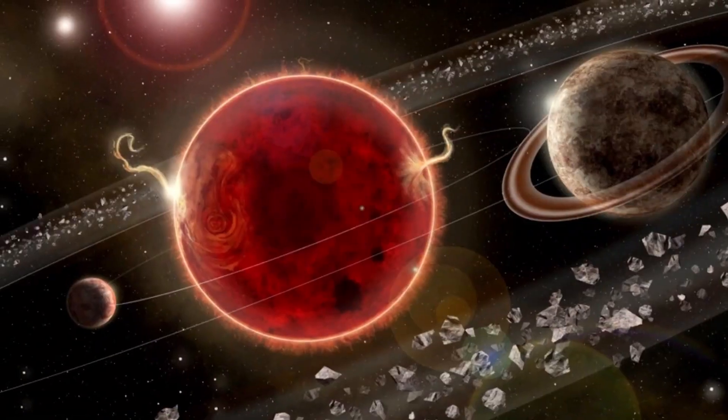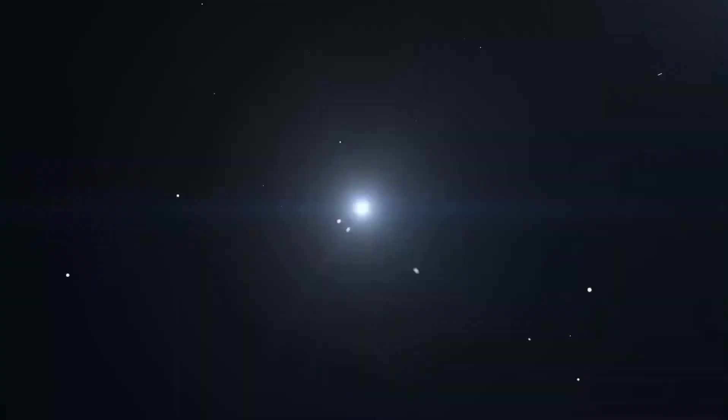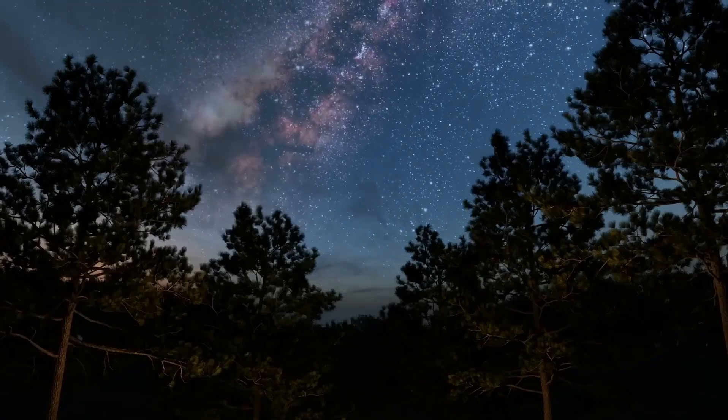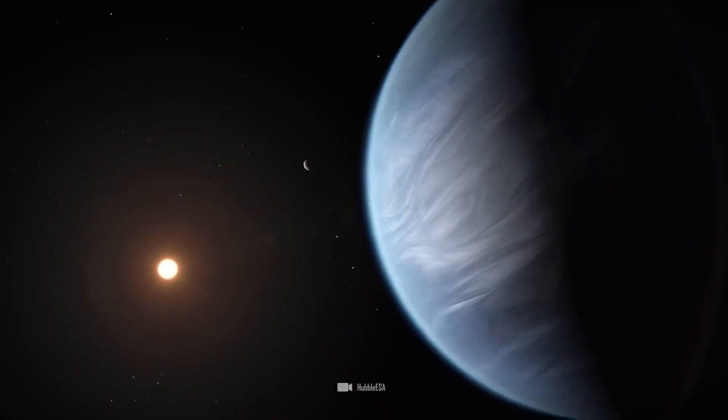Proxima b, being a prime candidate, has sparked interest in the search for signs of intelligent alien life outside our solar system. The concept of using JWST to detect potential alien civilizations on Proxima b involves observing the planet at multiple points in its orbit.